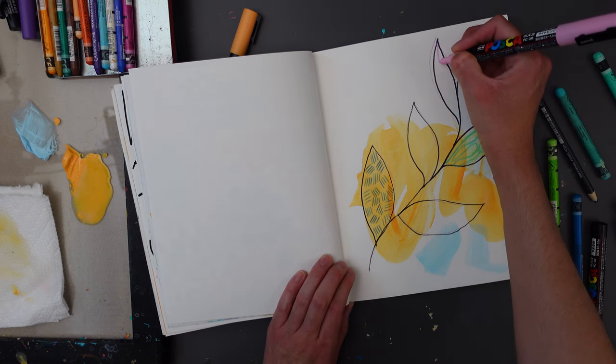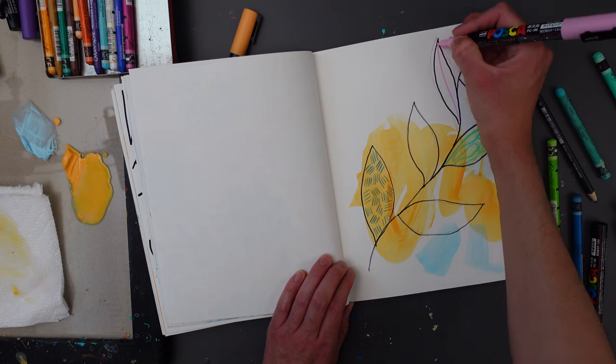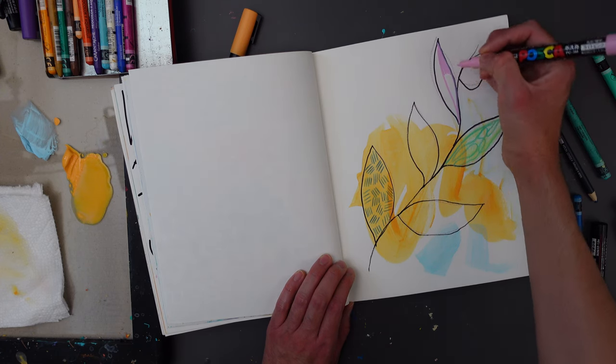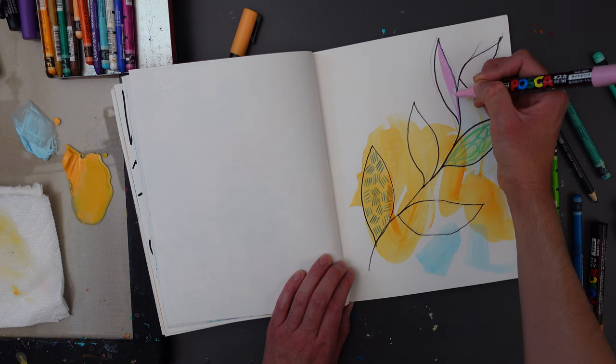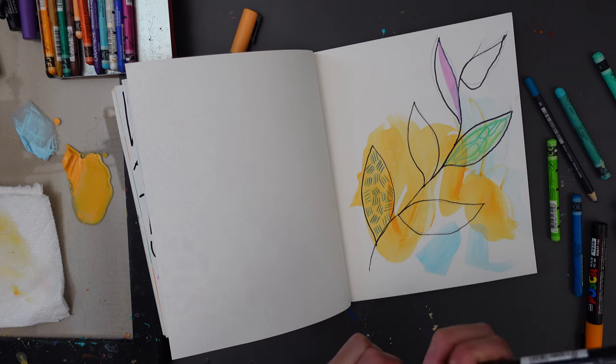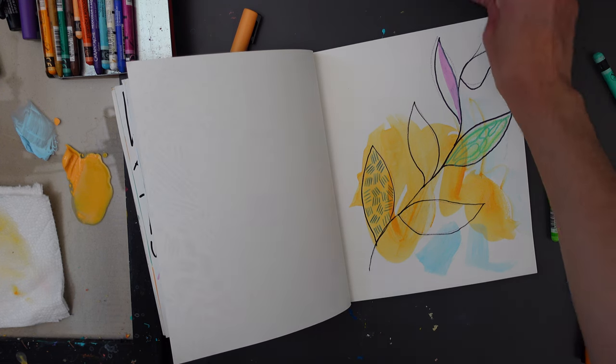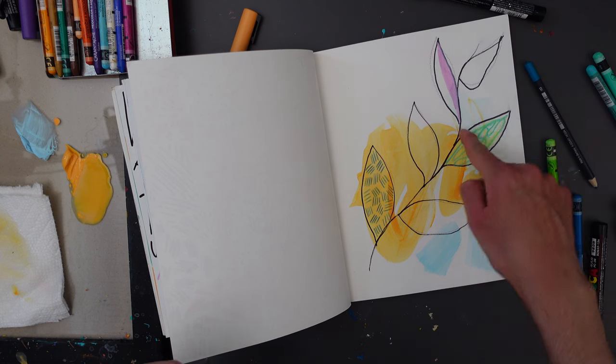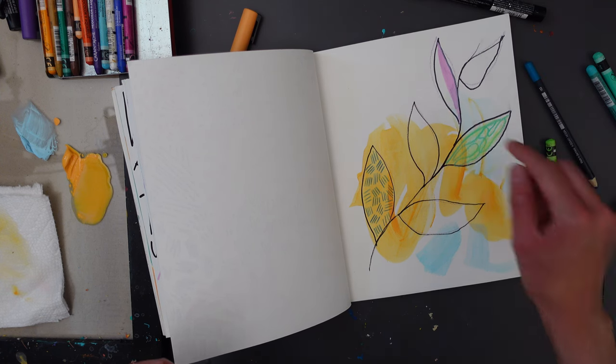You can also fill in one of the leaves, either halfway or totally filling it, adding some marks on top. Or I kind of like doing this method of splitting a leaf in half and then adding some marks on the other half.